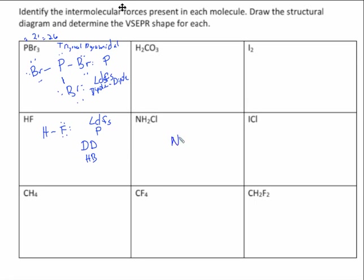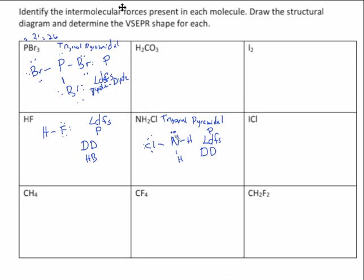Next is NH2Cl. If you draw the Lewis structure, you get N bonded to two H's and a Cl, with a lone pair on the nitrogen — trigonal pyramidal. Trigonal pyramids are polar. So what type of forces? Everything has London dispersion forces. Because it's polar, it also has dipole-dipole. Could it hydrogen bond? Does this molecule have a hydrogen bonded to a nitrogen, oxygen, or fluorine that has a lone pair? The answer is yes, so it can also hydrogen bond. It has all three forces.